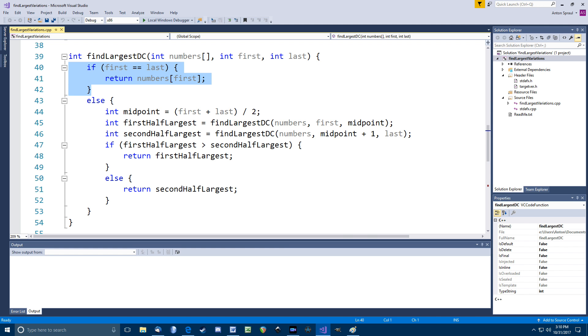So the function starts by seeing if those positions are the same, which means there's only one value under consideration, and which by definition is the largest value. So that's our base case that will end the recursion. Otherwise, we find the midpoint between the first and last positions in the array, and make two recursive calls to find the largest value in each half of the array. And then we can return the larger of those two returned values.